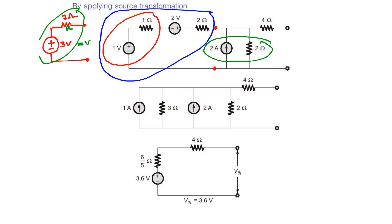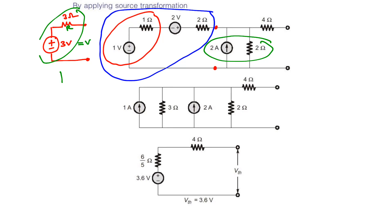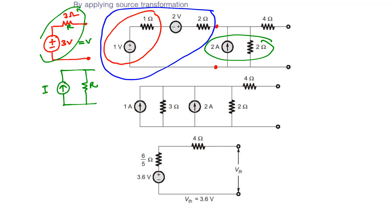The equivalent circuit of 3 volts, 3 ohms — you can apply Norton equivalent. This is the Thevenin equivalent and you can write the Norton equivalent this way. The resistor value will not change. The current value is I = V/R. V is 3 volts and R is 3 ohms, so you get 1 ampere, and R is 3 ohms.